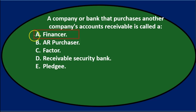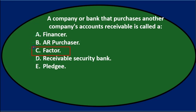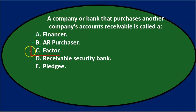A — financer — is not right; financing isn't really purchasing accounts receivable. B — AR purchaser — describes what's happening, so that's possible. C says factor — we may not know exactly what that is but we'll keep it. D — receivable security bank — sounds generic, probably not that one. E — pledgee — could possibly be it. The answer is actually C — factor. That's one you just have to know the terminology on. A company or bank that purchases another company's accounts receivable is called a factor.